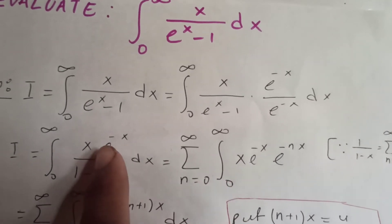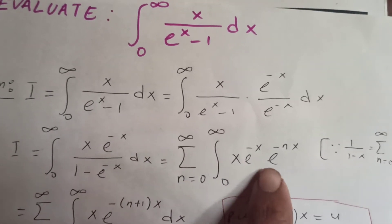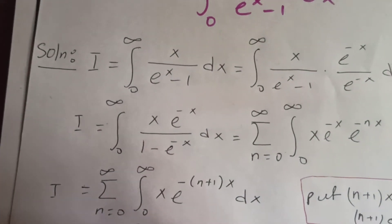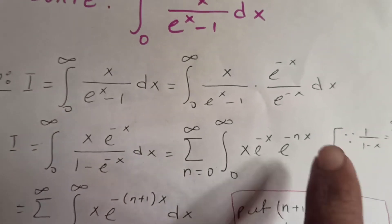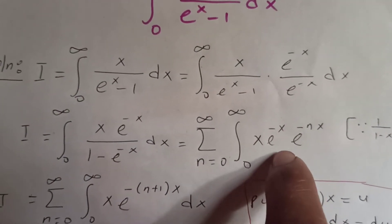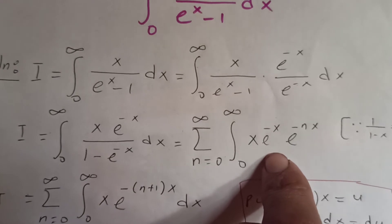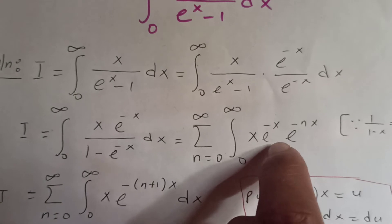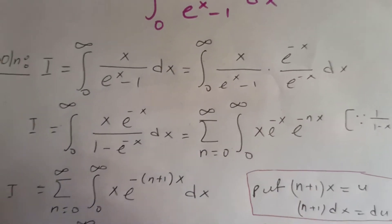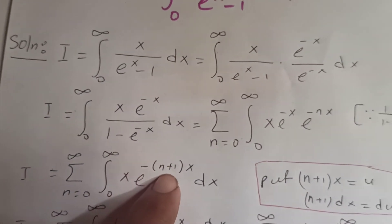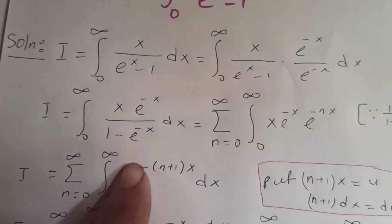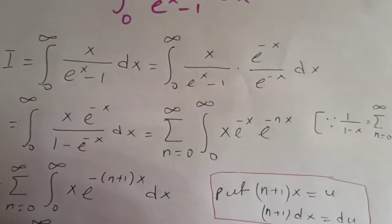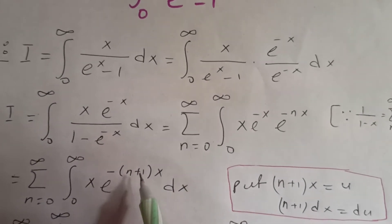So we have the integral of x times e^(−x) times e^(−nx). Combining these exponentials by the law of indices — since the bases are the same and they are multiplied, the powers are added — both are negative, so we factor out the negative. Now let's use substitution: let (n+1)x equal to u.